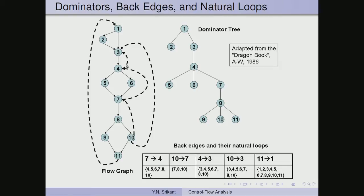In our example we have many back edges: 7 to 4, 10 to 7, 4 to 3, 10 to 3, and 11 to 1. Let us take the back edge from 7 to 4. It is a back edge because 4 dominates 7, which can be easily verified. In the algorithm we put 4 into the loop as the header corresponding to the back edge 7 to 4. There is always a back edge to which a natural loop corresponds, so we are tracing the loop structure of 7 to 4.